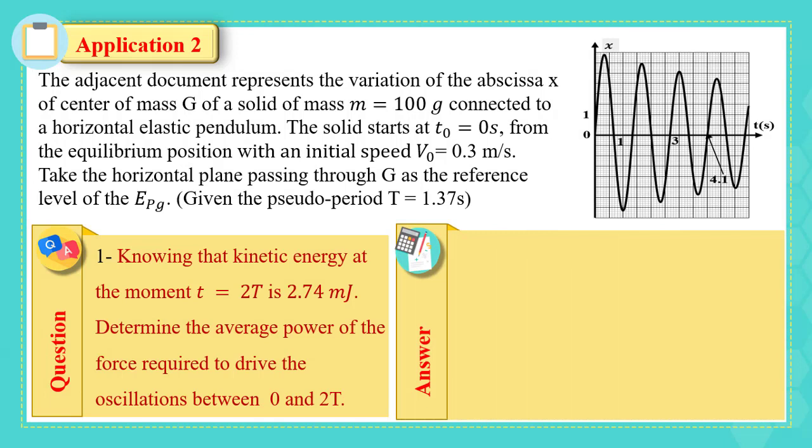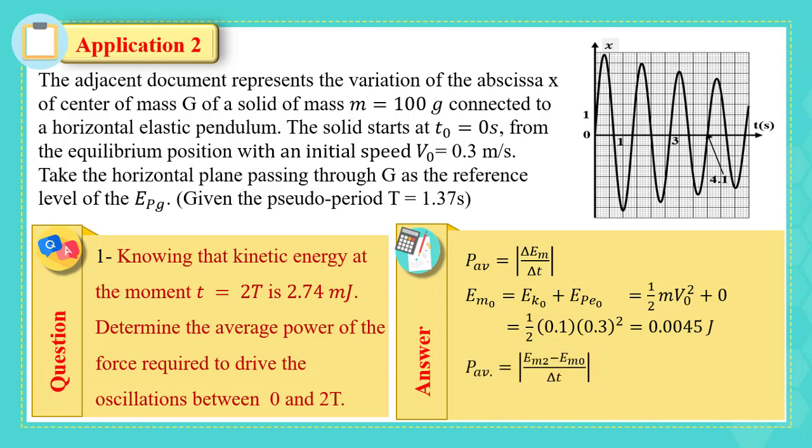Remember the expression of the average power, which is the absolute value of the variation in the mechanical energy with respect to variation in time. The mechanical energy at T equals 0 is the kinetic energy plus the elastic potential energy. But at equilibrium, the elastic potential energy is 0. So the kinetic energy at 0 seconds is 0.5 times mV squared, which is 0.0045 joules. The average power is the absolute difference between the mechanical energy at 2 periods and the mechanical energy at 0 seconds over delta T. The mechanical energy at the second period is given as 2.74 times 10 to the minus 3.